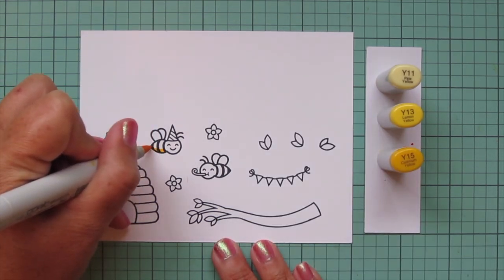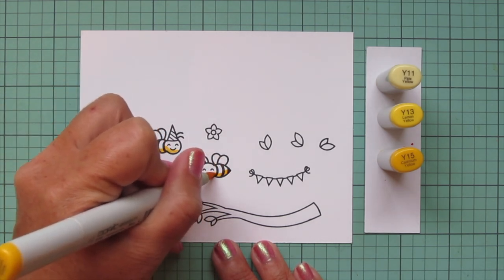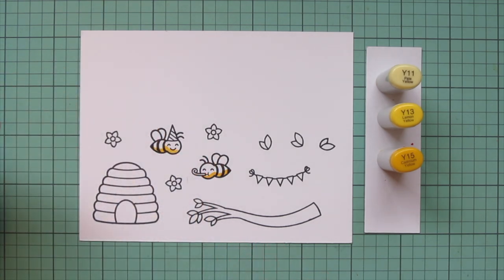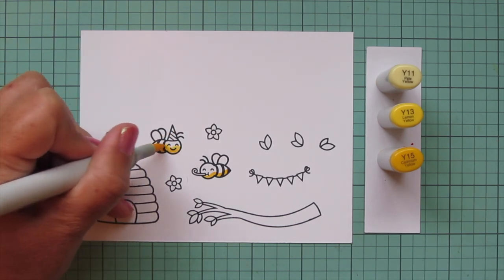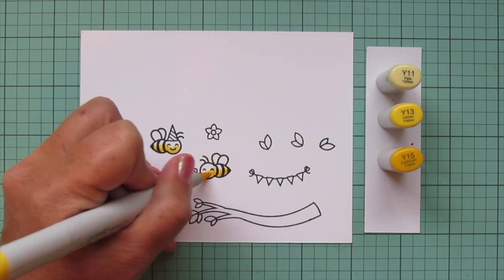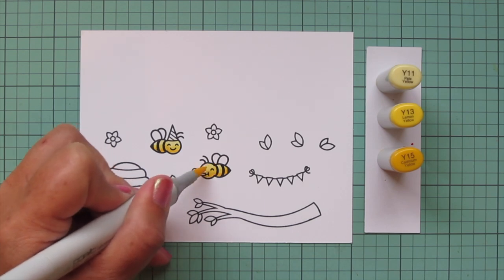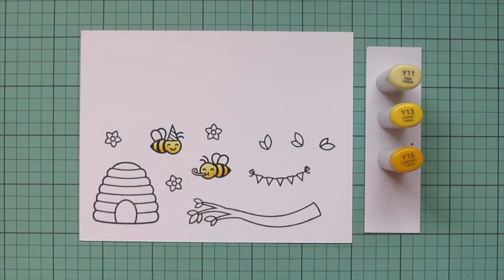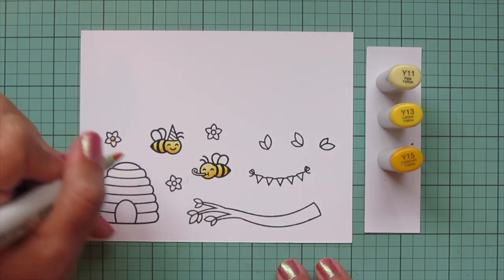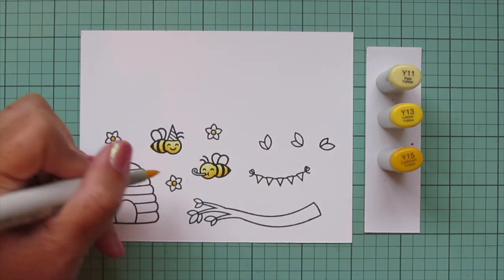I'm going to start with the bees, using Y11, Y13, and Y15. I'm adding a little Y15 down at the bottom and then blending up with the Y13, then filling in the rest of that space with the Y11, giving them a nice little highlight at the top.